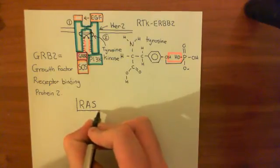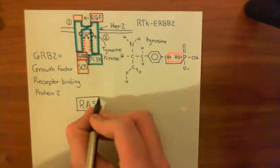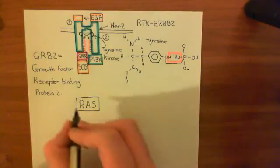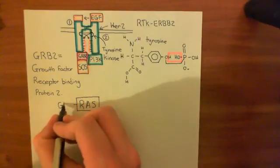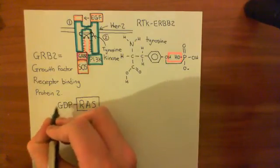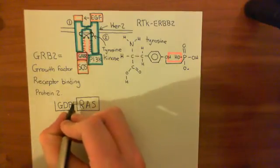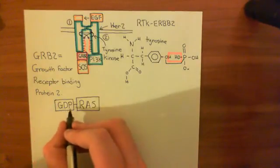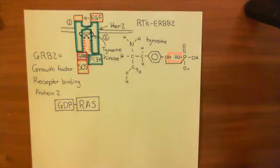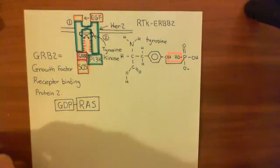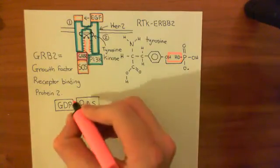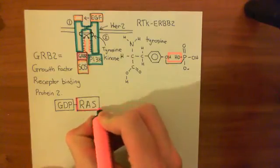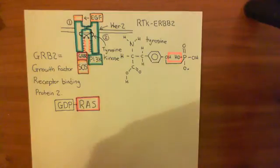RAS has two states: an on state and an off state. In the off state, it has guanosine diphosphate (GDP) bound to it. In the on state, it has GTP — guanosine triphosphate — bound to it. There are many different types of RAS proteins — such as KRAS and NRAS — but they generally do the same thing, so we'll keep it general and just say a RAS protein.